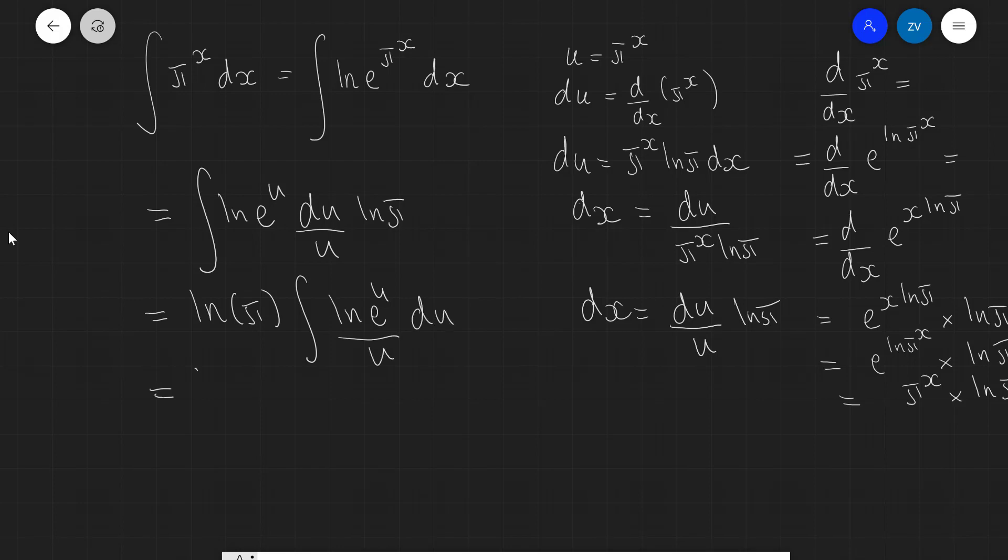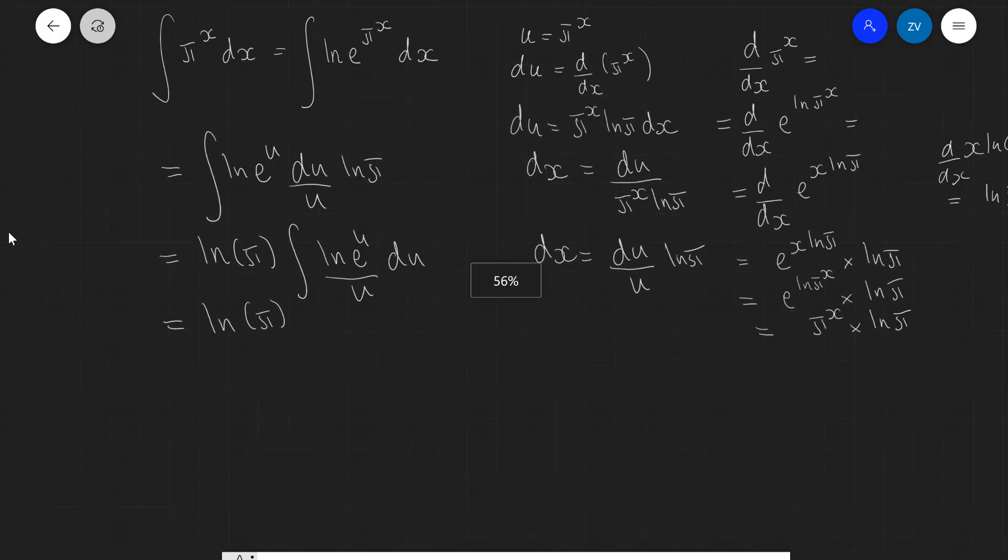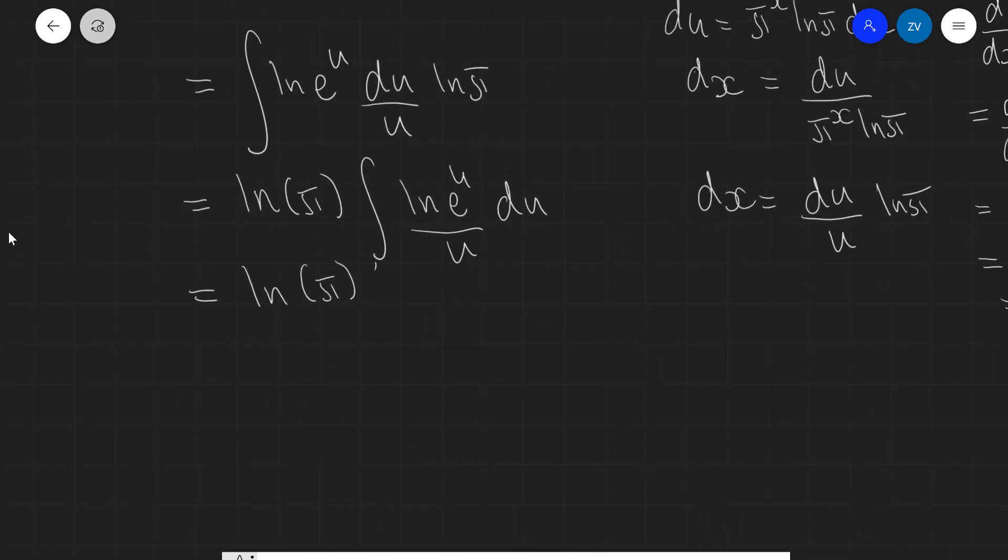1 over ln π times the integral of ln e^u divided by u du. Well, this is just equal to 1 over ln π times the integral of, well, ln e^u, that's just equal to u. That will be the integral of u over u du.